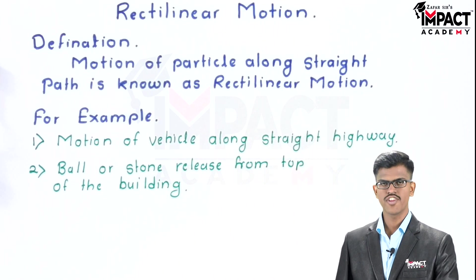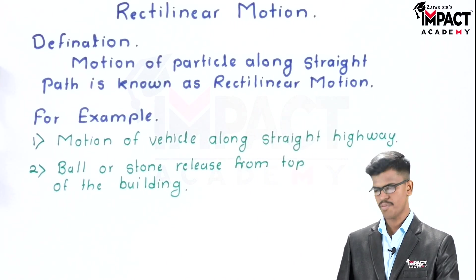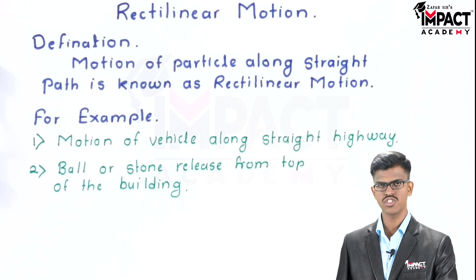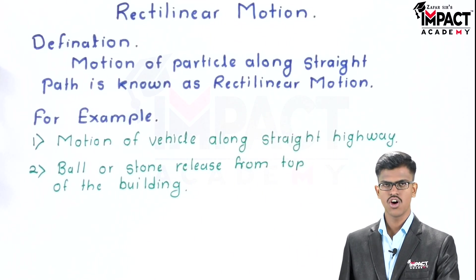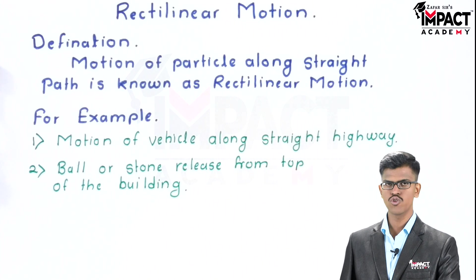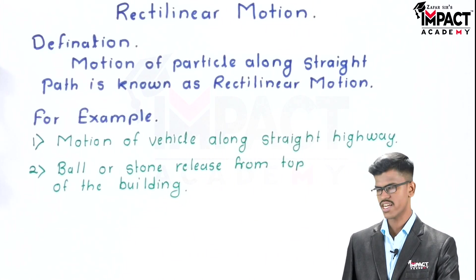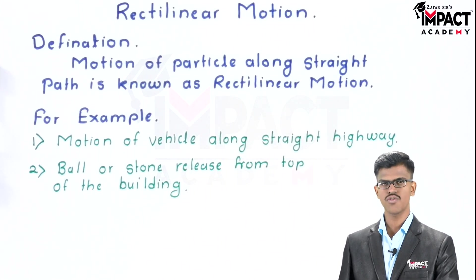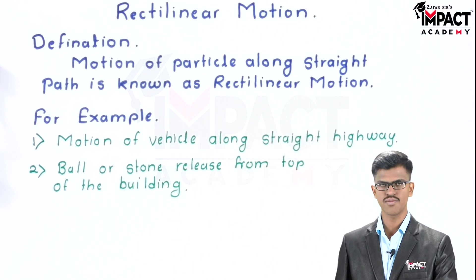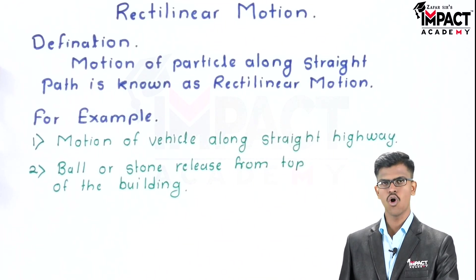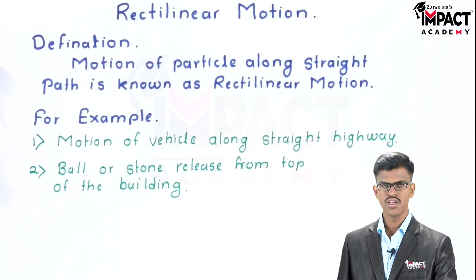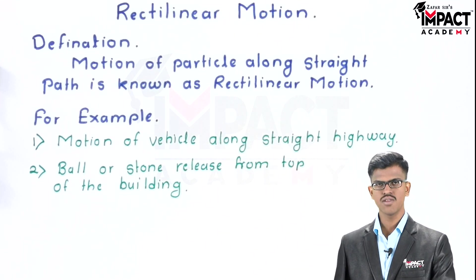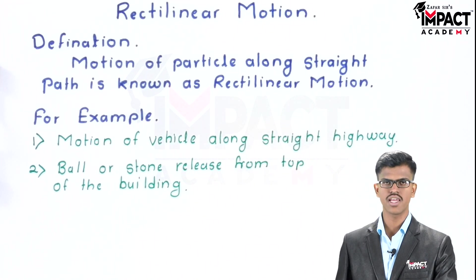The motion of the particle along a straight path is known as rectilinear motion. This straight path may be a horizontal path, or may be a vertical path, or may be an inclined path. For example, the motion of a vehicle along a straight highway — here the motion of the particle is along the horizontal path. Second example: a ball or stone released from the top of a building — here the motion is along a vertical path. Or in projectile motion, the motion of the particle is along an inclined path.